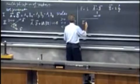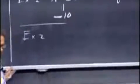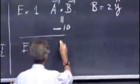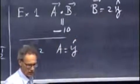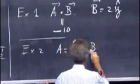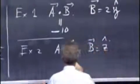I can give you another example, example 2. Suppose A itself is the unit vector in the Y direction, and B is the unit vector in the Z direction.